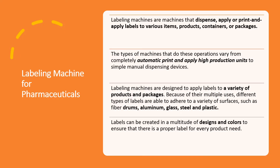Labeling machines are basically machines that dispense, apply, print, and apply labels to various sorts of packing material, products, different containers, or packages. They provide the outermost adhesive sticking label to the medicament. There are different kinds of machines that do this operation, starting from fully automatic high-speed machines with very high production output to simple manual machines operated manually.